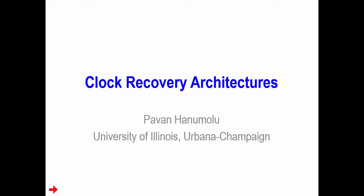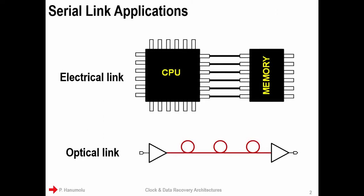Hello, everybody. Today I'm going to talk to you about clock and data recovery architectures. Clock and data recovery is a very important function in many serial link applications, and serial links are very commonly used in many places. For example, they are used in CPU to memory communication, as I'm indicating here. Since the transmission signals are in the electrical domain, these serial links are referred to as electrical links.